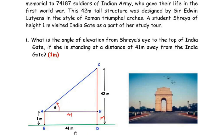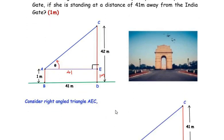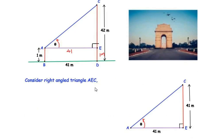Since AE and BD are parallel, the length of AE equals the length of BD, which is 41 meters. Similarly, AB equals DE, so DE is also 1 meter. To find the angle of elevation, we consider the right-angled triangle AEC. In triangle AEC, angle A is theta (angle of elevation). The length of AE is 41 meters, and the height CE equals the total height of India Gate minus DE — that is, 42 minus 1 gives us 41 meters.